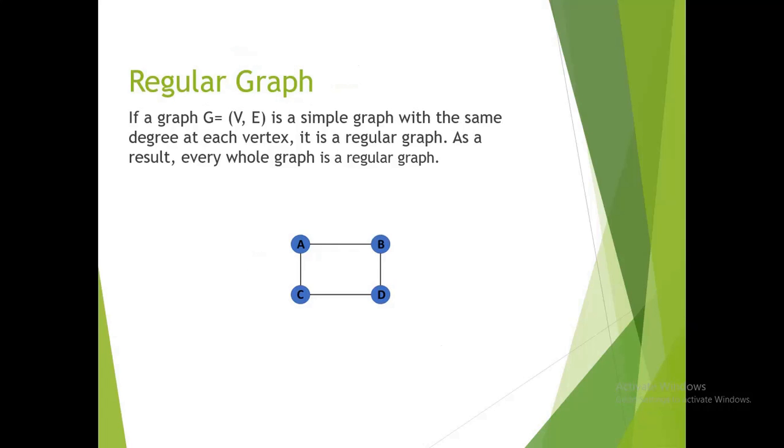Regular graph: if a graph G = (V, E) is a simple graph with the same degree at each vertex, it is a regular graph. As a result, every whole graph is a regular graph.